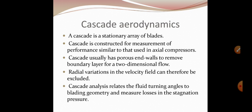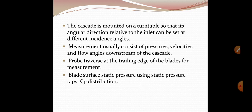The cascade is mounted on a turn table so that its angular direction relative to the inlet can be set at different incidence angles. Measurement usually consists of pressures, velocities, and flow angles downstream of the cascade.